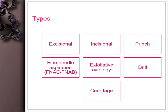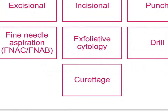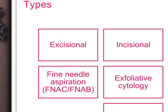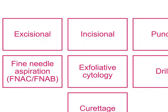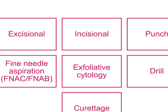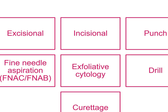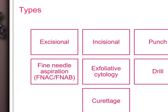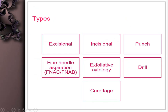An excisional biopsy is a procedure in which the whole lesion is removed in toto. When the lesion is too big, we may have to take a small piece — that is called an incisional biopsy. This smaller piece may also be taken using a punch, hence called a punch biopsy.